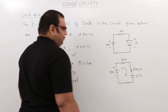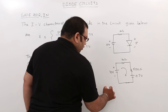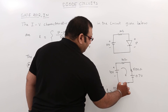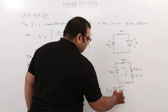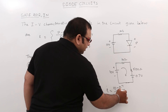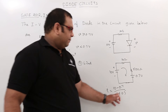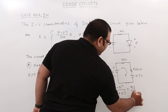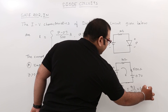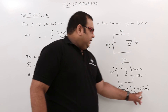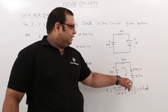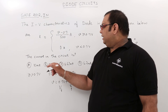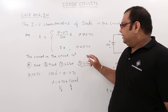The current in this circuit is I = (10 - 0.7) / (1 kΩ + 500 Ω) = 9.3 / 1.5 kΩ = 6.2 milli-amperes. So the current in this circuit is 6.2 milli-amperes, which corresponds to option D — the correct answer.